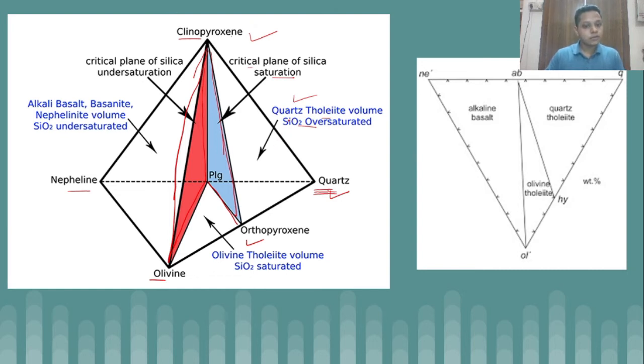On the left side of the critical plane of silica saturation and between the critical plane of silica under-saturation, we get olivine tholeiite, which is silica saturated region. On the left side of this olivine-clinopyroxene-plagioclase plane, that is the critical plane of silica under-saturation, we get silica under-saturated basalts.